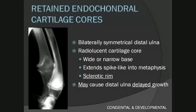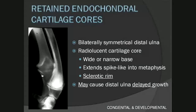The radiological changes are often bilaterally symmetrical, and the distal ulna is most commonly affected — because the distal ulnar physis contributes 85% of the longitudinal growth of the bone and is thus very active. A radiolucent cartilage core is seen within the ulna, extending in a spike-like or flame-like fashion into the metaphysis, and it can have a sclerotic rim. Don't confuse this with the physis — the physis is a radiolucent cone-shaped line projecting distally, whereas the cartilage core projects into the metaphysis proximally.